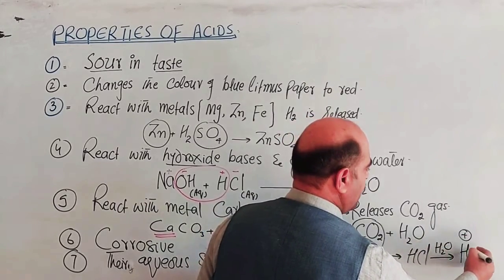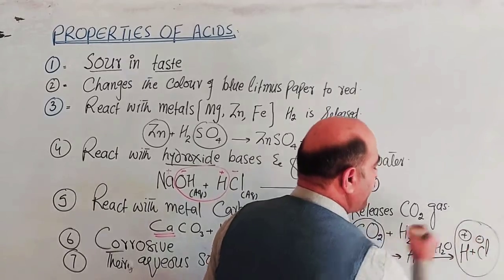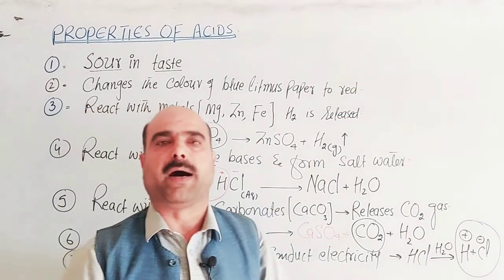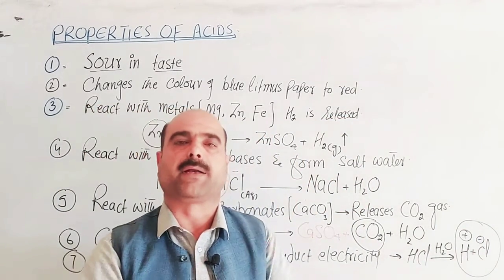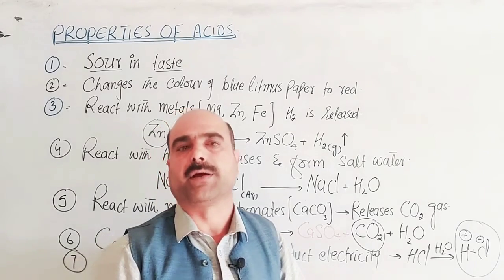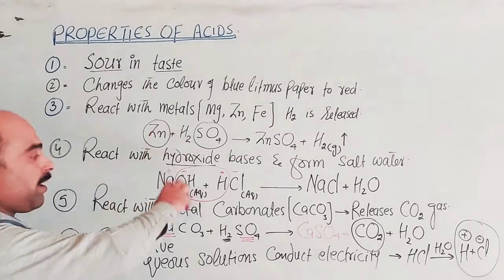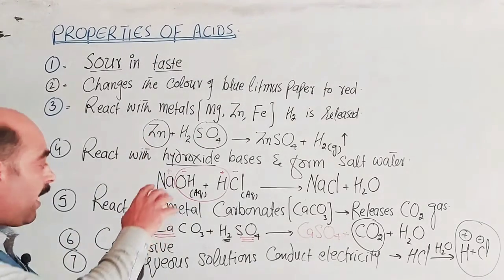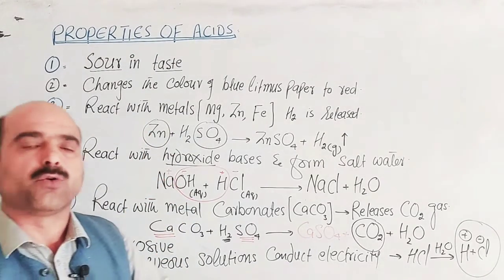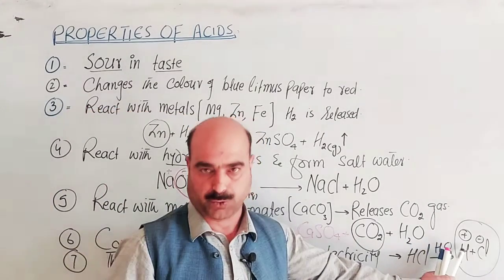When acid is dissolved in water it dissociates into hydrogen ions and chloride ions. These free ions are available and the movement of ions — movement of charges — produces electric current. These are the main properties of all acids, and all these properties are due to the hydrogen ion which acids provide in their aqueous solutions.